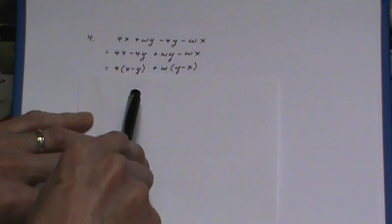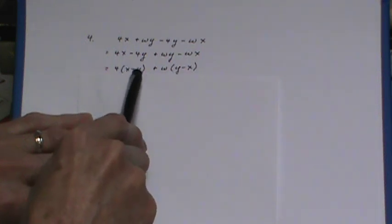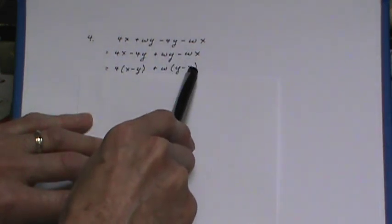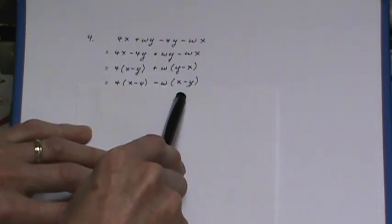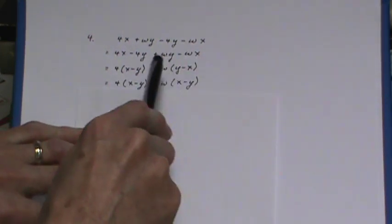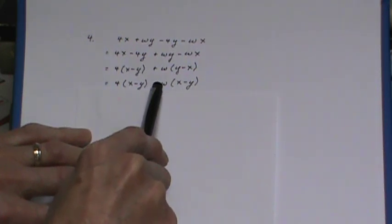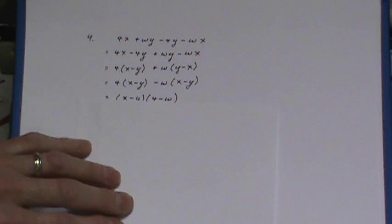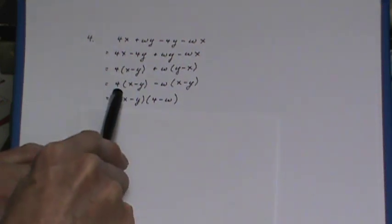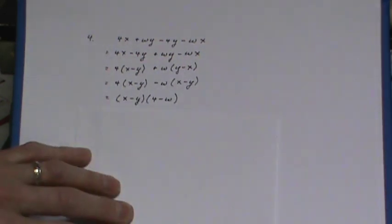Now I've still got a bit of a problem here. You see this is x minus y, this is y minus x, so I have to make a sign change here, turn that into x minus y which means I have a sign change in front. Now I can take the x minus y out as a common factor leaving 4 minus w.